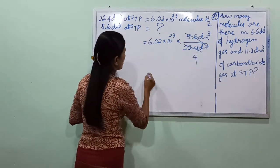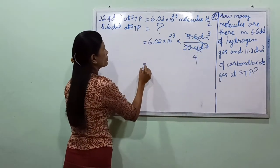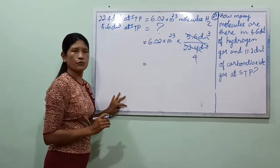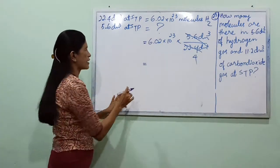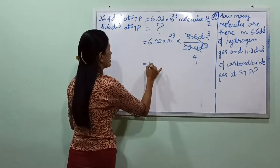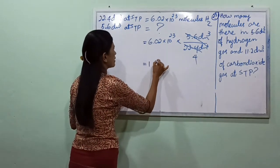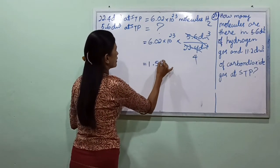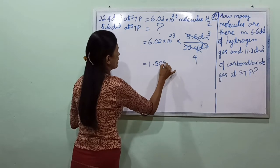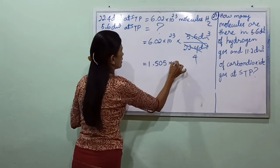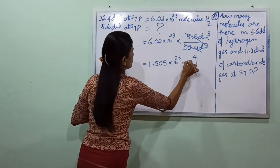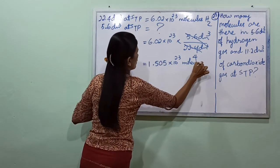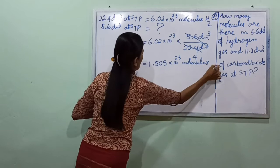The result is 1.505×10²³ molecules of H₂ in 5.6 dm³ at STP.